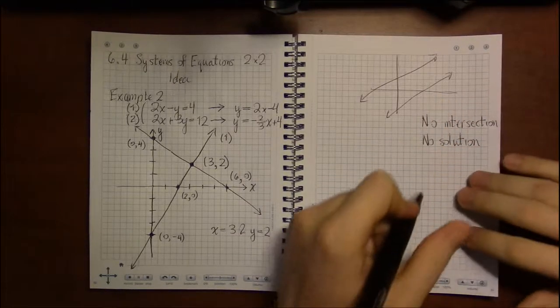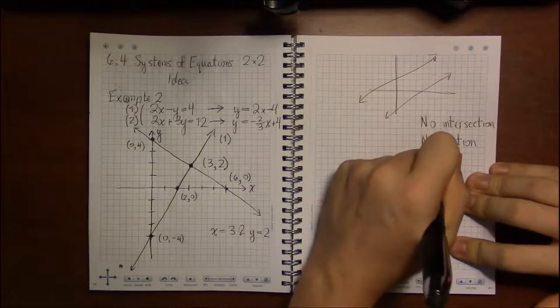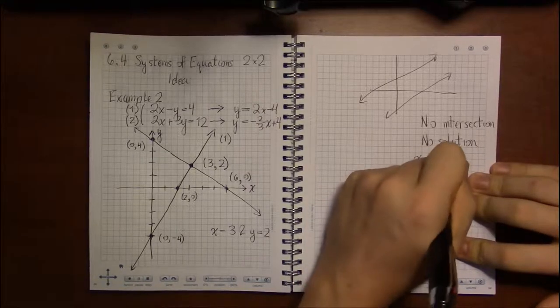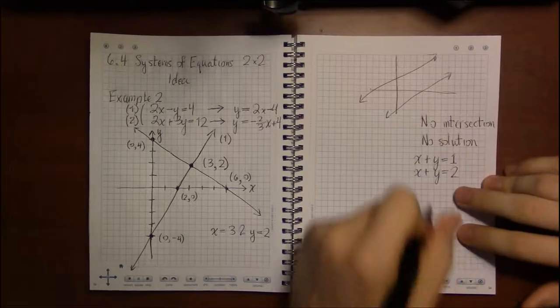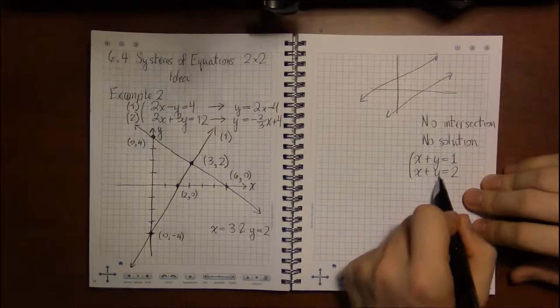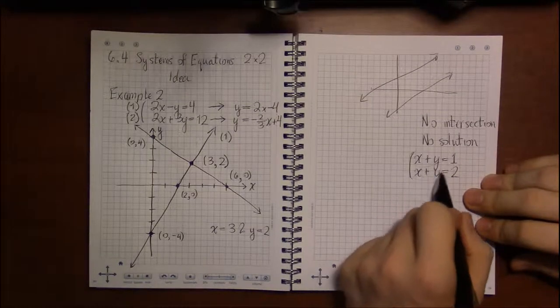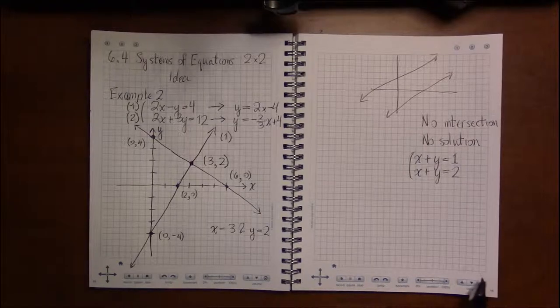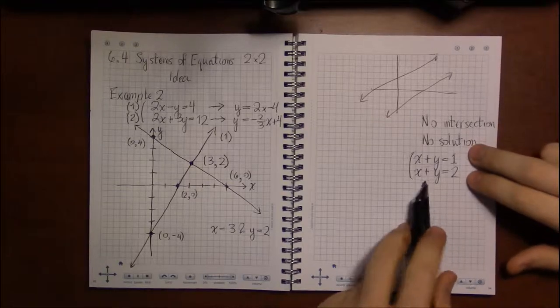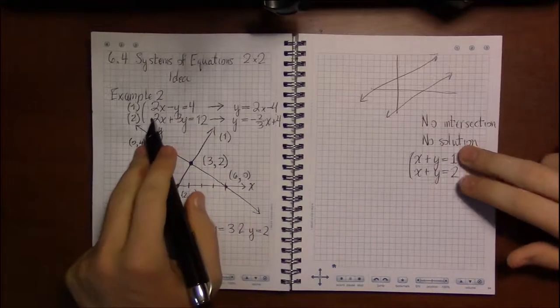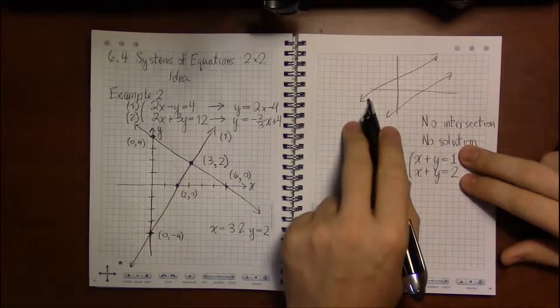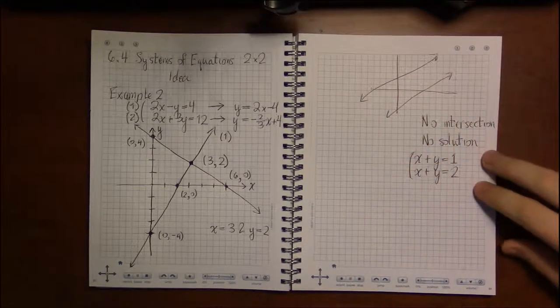You could see that in something like x plus y equals one and x plus y equals two. Here we have something being one and yet at the same time this same something is equal to two. Well that can't happen. This is a rather obvious example, but it demonstrates the idea that you could come up with a system that has no solution. You can have two lines that are parallel.